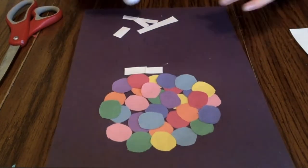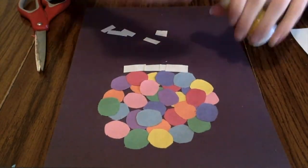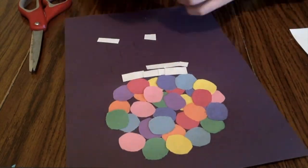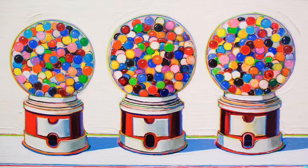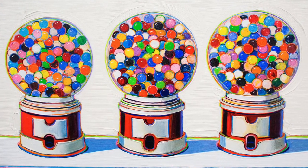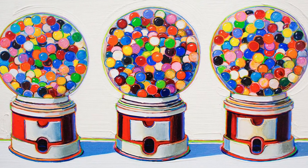As you start to collage the bottom of the machine, you might be wondering, Ms. Hearson, how do I remember what colors go where? Just look at Wayne Tebow's painting Three Machines while you collage.